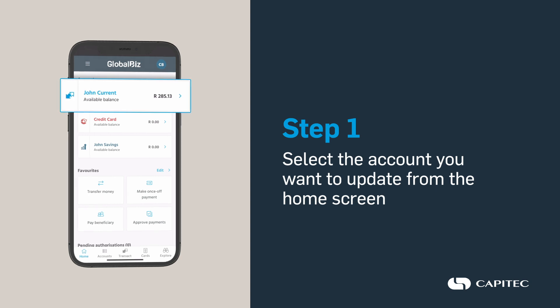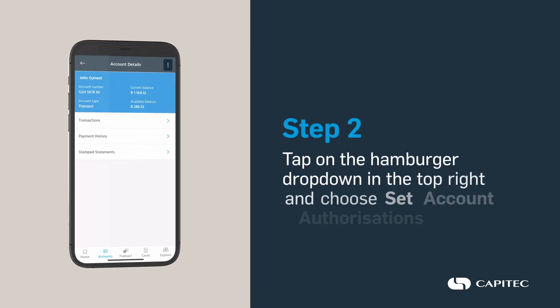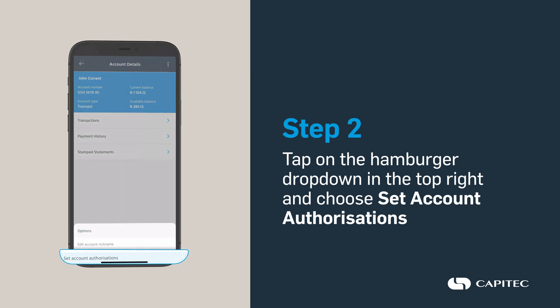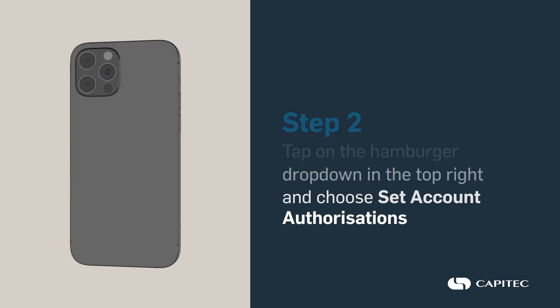If you have more than four accounts, you'll need to select a category first and then the account from within it. Tap on the hamburger drop-down in the top right and choose Set Account Authorizations.